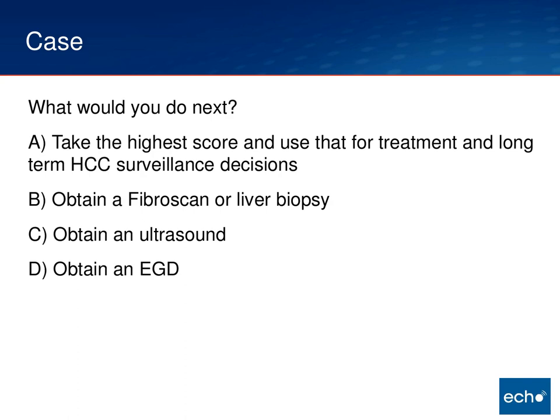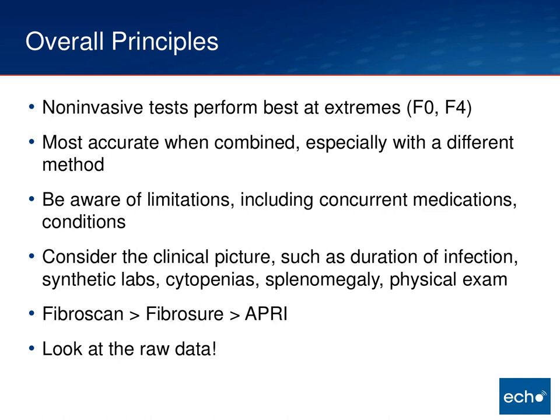So I want to go over the overall principles of non-invasive testing. First, non-invasive tests have traditionally performed really well at the extremes — F0 or F4. Once you get into F1, F2, F3, it's not as sensitive and specific. I would also caution you against using just one non-invasive test; they are best when you can combine them. The best combination, as I'll go over, is when you use a FibroScan — an imaging-based approach — with a blood test. Also be aware that some blood tests have limitations: certain medications might drive up the values, and other medical conditions like hemolysis can affect results.